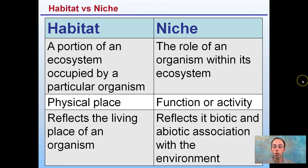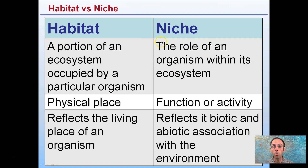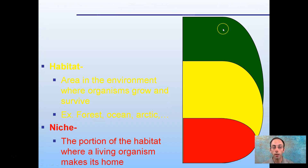A good comparison between habitat and niche: habitat is a portion of an ecosystem occupied by a particular organism — it's a physical place that reflects the living place of an organism. A niche, on the other hand, is the role of an organism in that ecosystem. The role is a function or activity, and it reflects the biotic and abiotic associations with the environment.